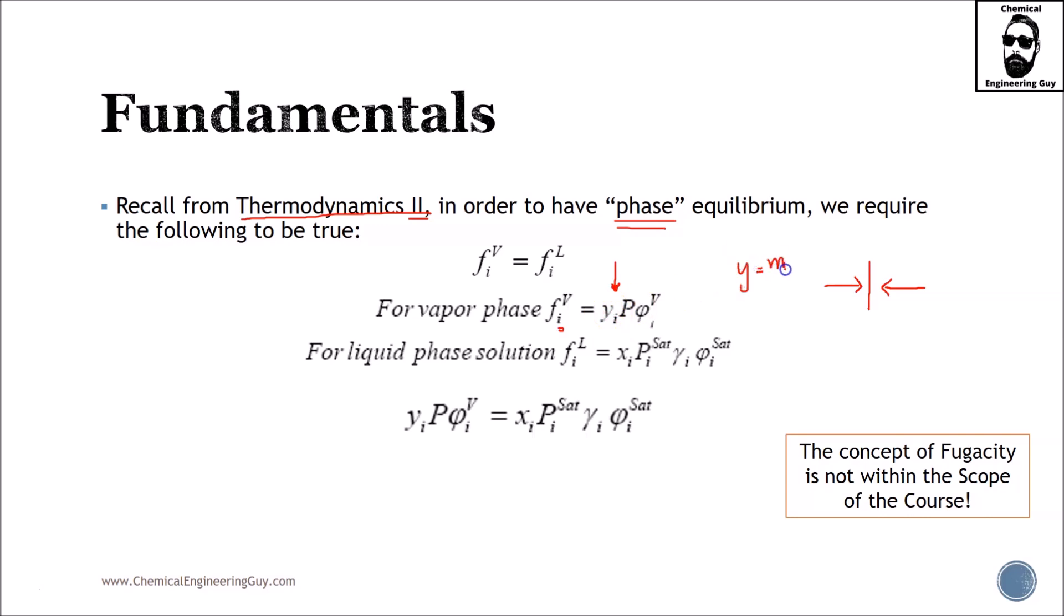Remember, this is mol of I divided by the total mol of the mixture times the total pressure of the system times this phi, or let it be a fugacity coefficient. We're not going to see that much on how this coefficient is calculated, but for now, let it be true.